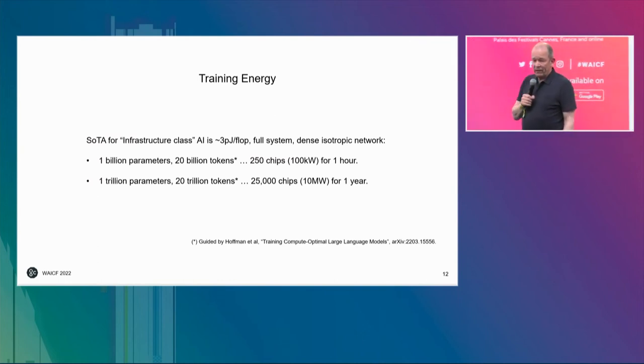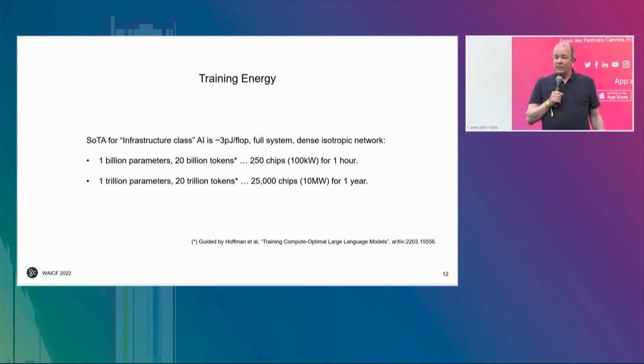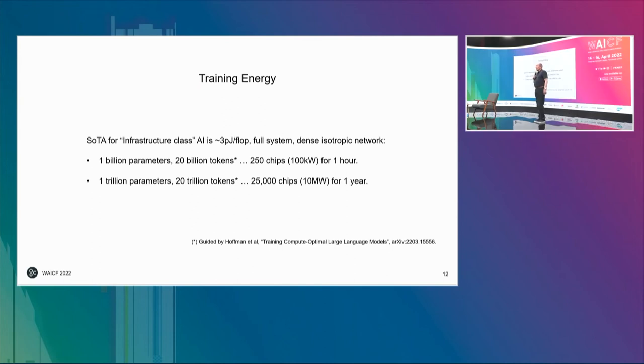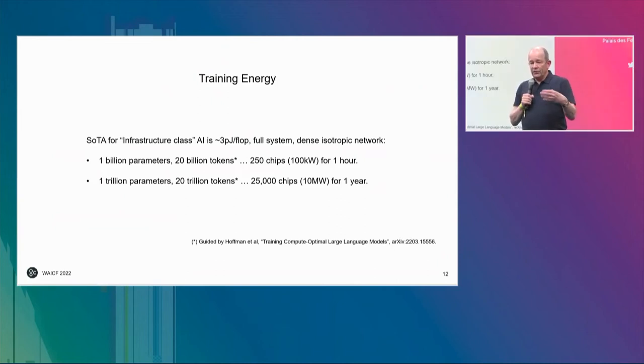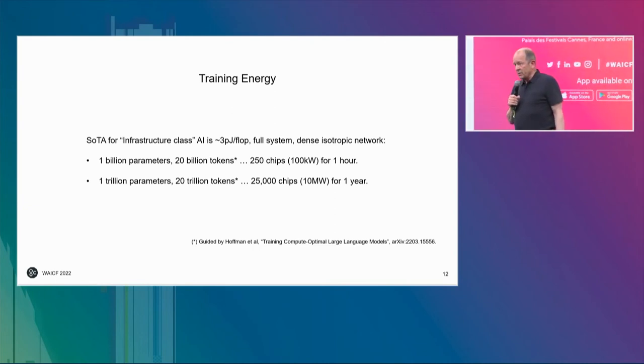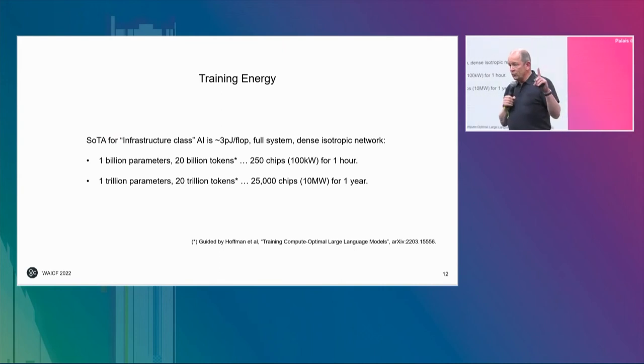What does that mean? State of the art today is about three picajoules per op for infrastructure class machinery. If you've got a billion parameters, you're probably going to take about 20 billion tokens to optimally train a network of that size. So you're going to need about 250 chips and 100 kilowatts for one hour. That's okay. But if I try to get up by a factor of 1,000, because most neural networks today are dense - every parameter interacts with every datum - if both the parameters go up by 1,000 and the data go up by 1,000, the compute goes up by a million. Suddenly you need 25,000 chips and a 10-megawatt power station for a year to run a program once. That's one trillion parameters. So obviously we're not going to get to 100 trillion parameters, which is human.